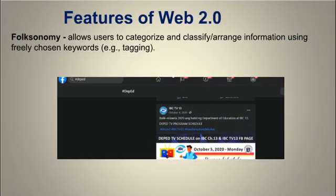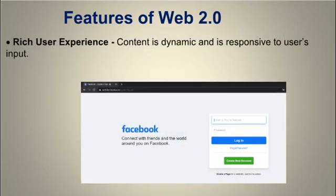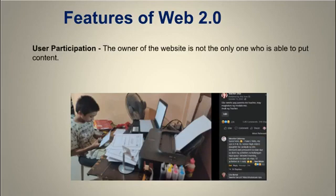Popular social networking sites such as Twitter, Instagram, and Facebook use tags that start with the pound sign — this is also referred to as a hashtag. An example of localized content is when, on social networking sites, your logged-in account is used to modify what you see on their website. Others are also able to place content of their own by means of comments, reviews, and evaluations.